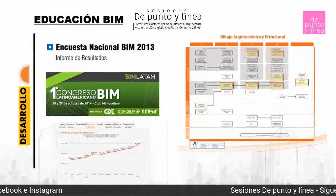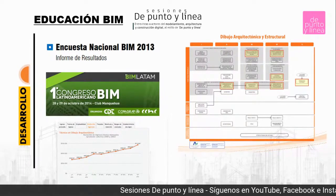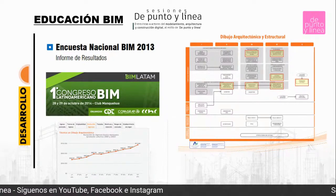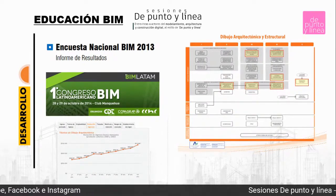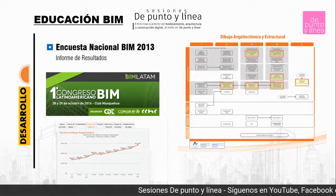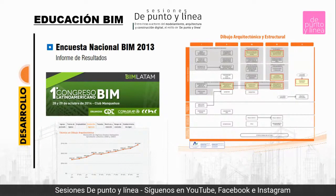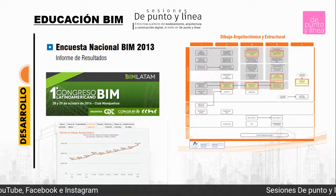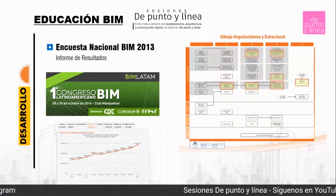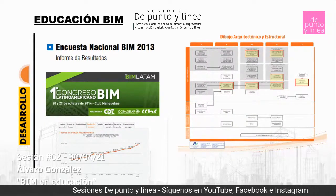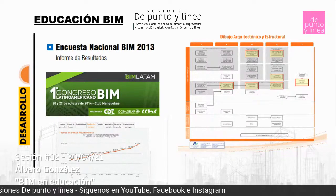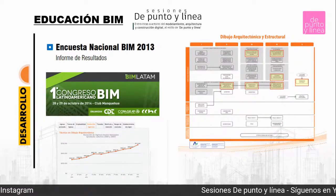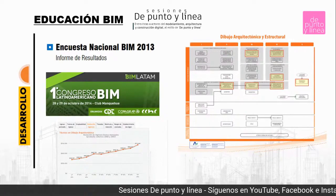En ese tiempo dije ¿dónde saco la información? La encuesta nacional BIM, que en mi país está la de 2013, 2016 y 2019, la recomiendo sobre todo para los que están haciendo tesis de BIM e investigación, porque son estadísticas bien interesantes que la Universidad de Chile logró a través del Colegio de Arquitectos y el Colegio de Ingenieros Consultores. Si ustedes comparan 2013, 2016 y 2019, hay un avance muy grande por lo menos en Chile.